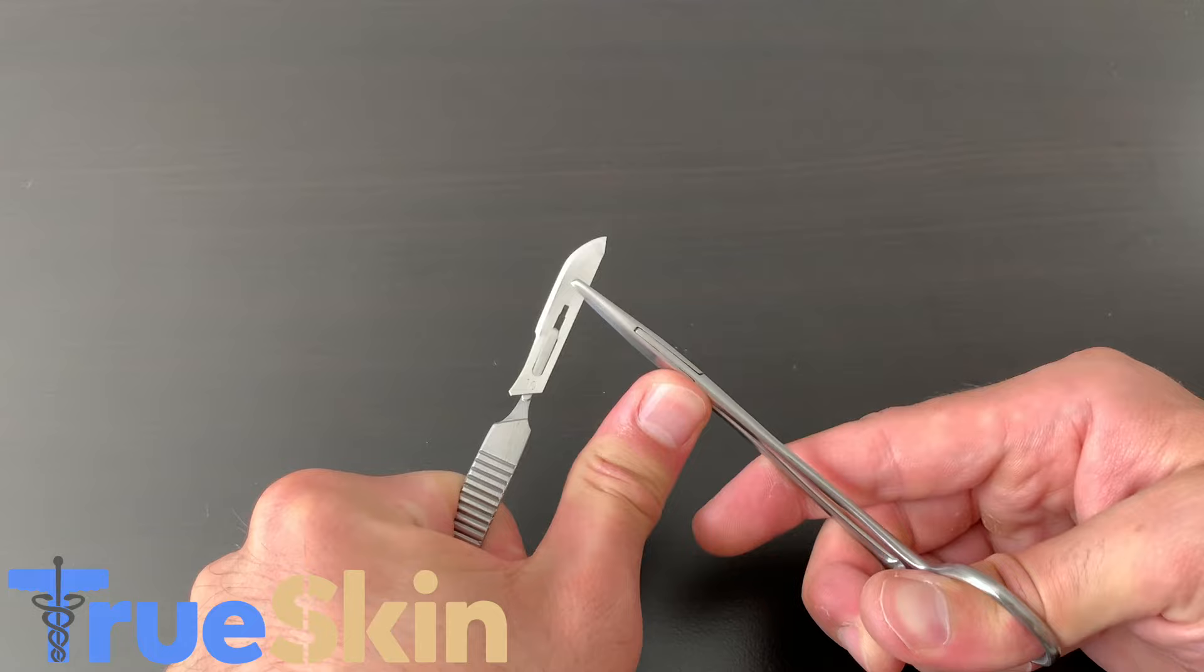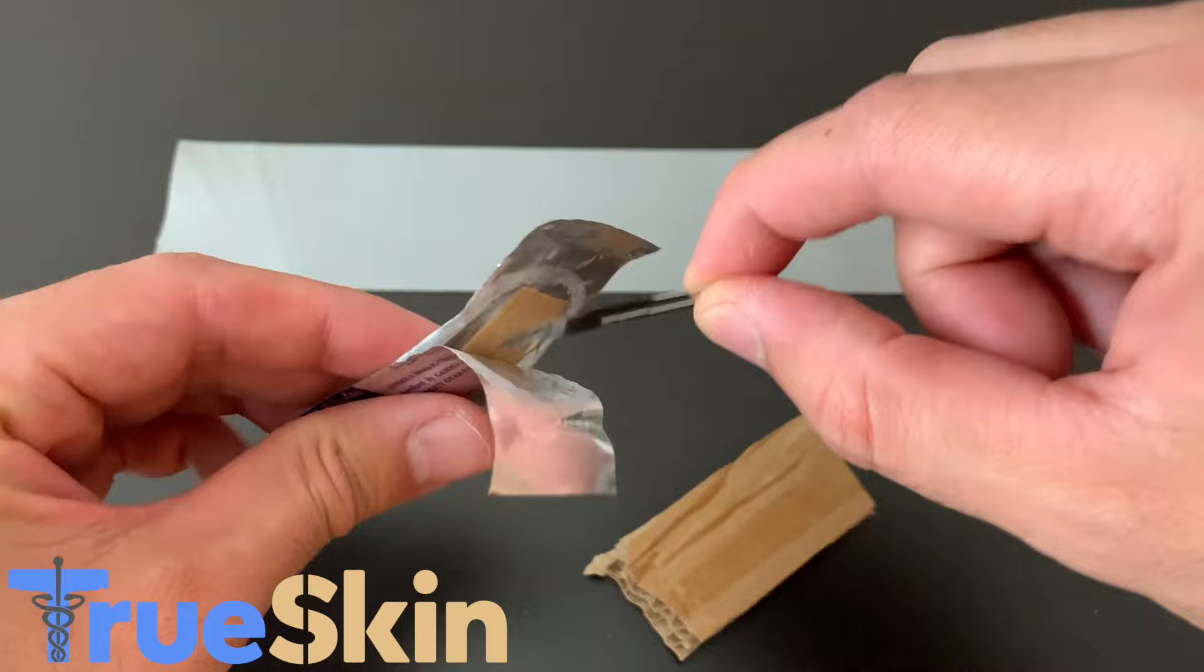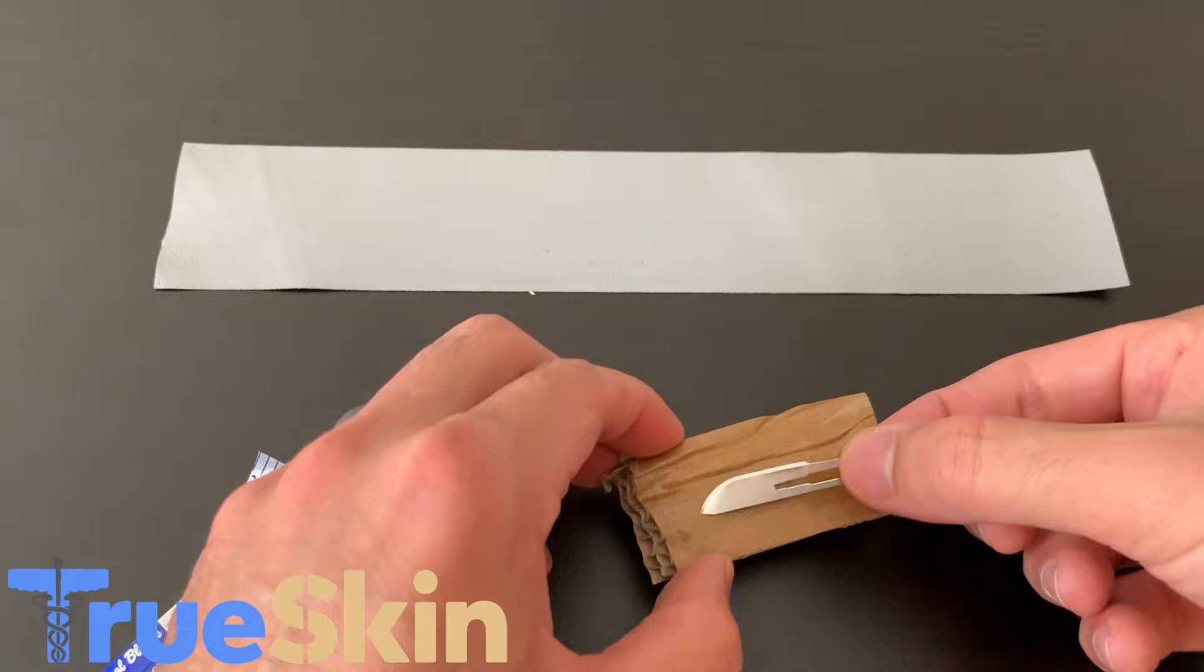Now we never want to throw a blade in the trash can. To secure it, go ahead and place it back in its original package. You can tape it up to secure it that way, or if you've lost the package, you can use a piece of cardboard and tape it up to secure it.